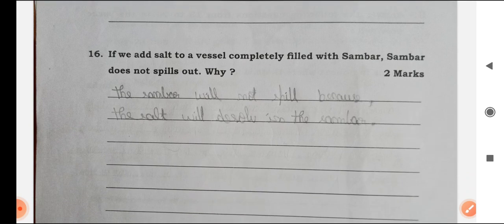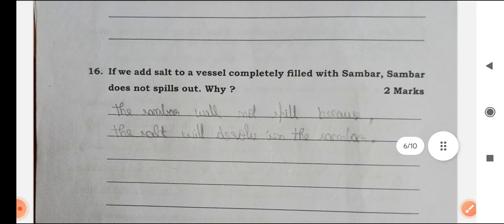If we add salt to a vessel completely filled with sambar, sambar does not spill out. Why? The sambar will not spill out because the salt will dissolve in the sambar.